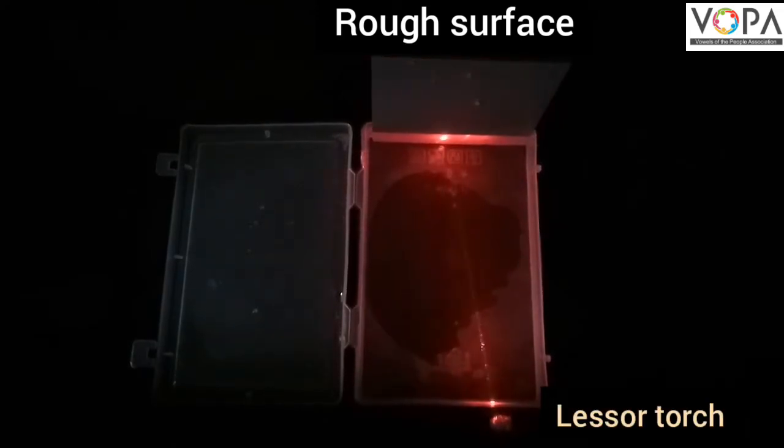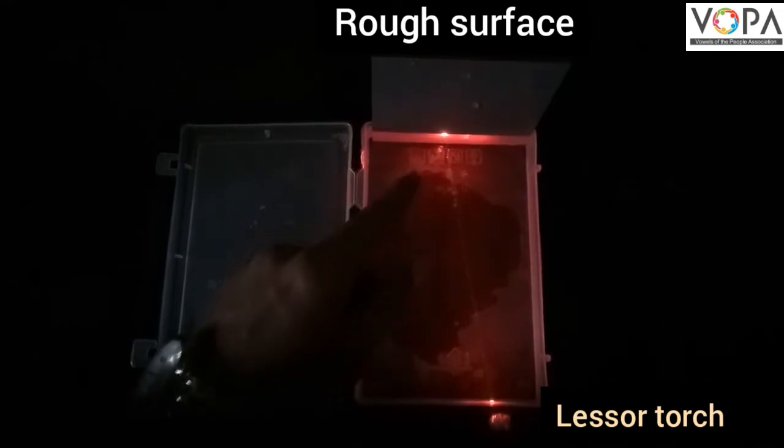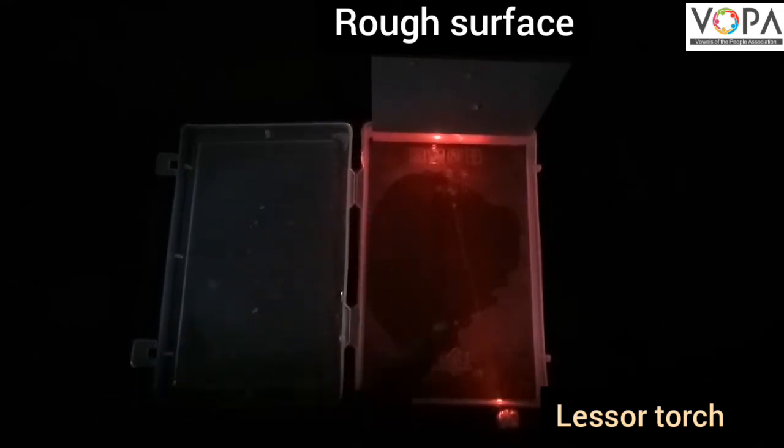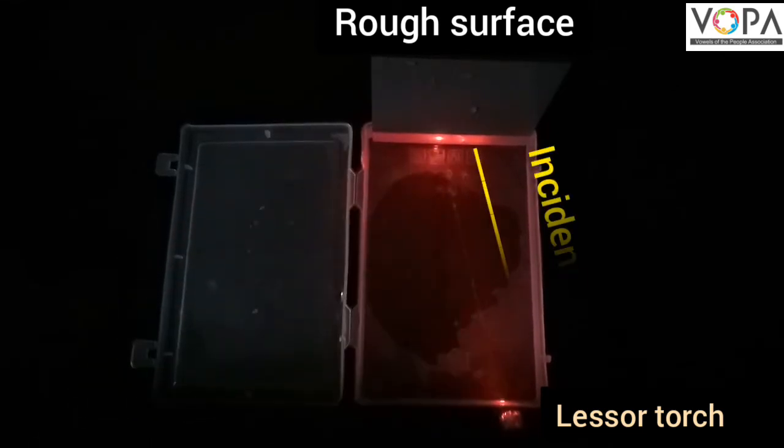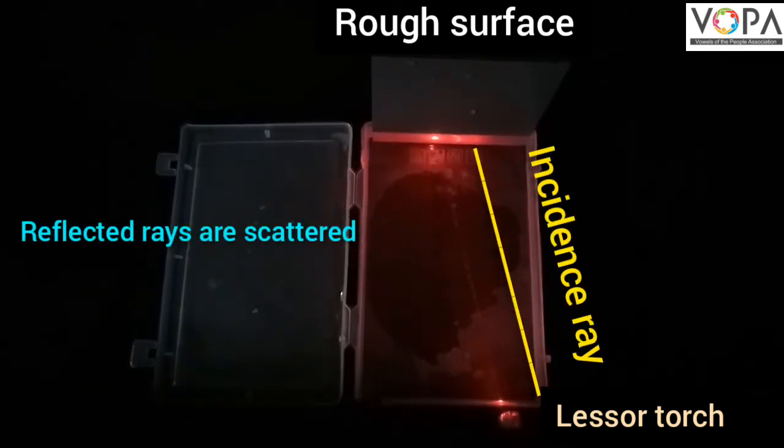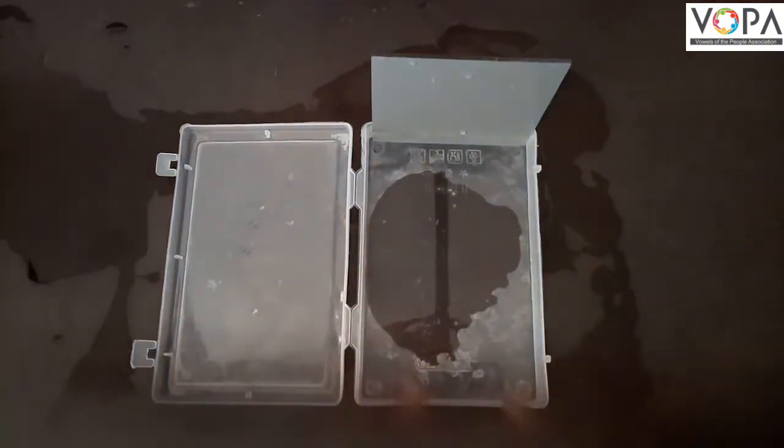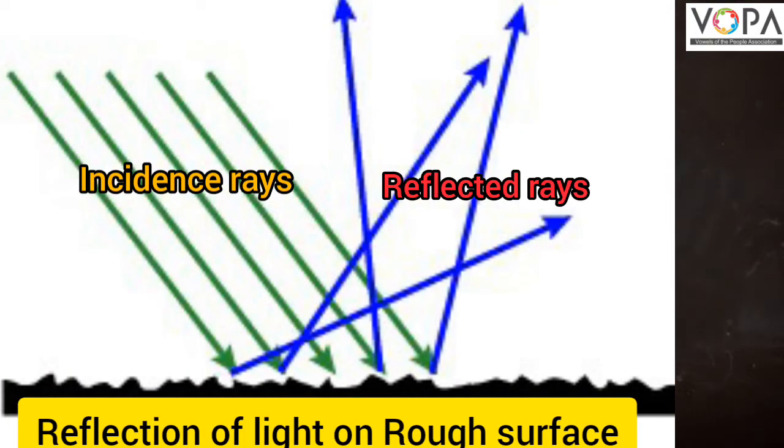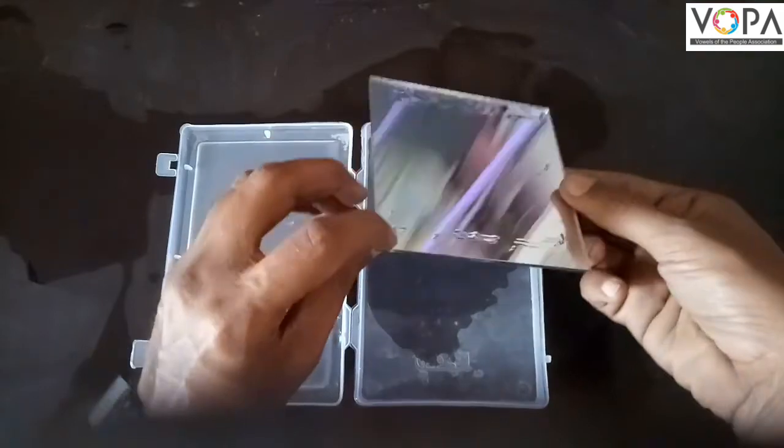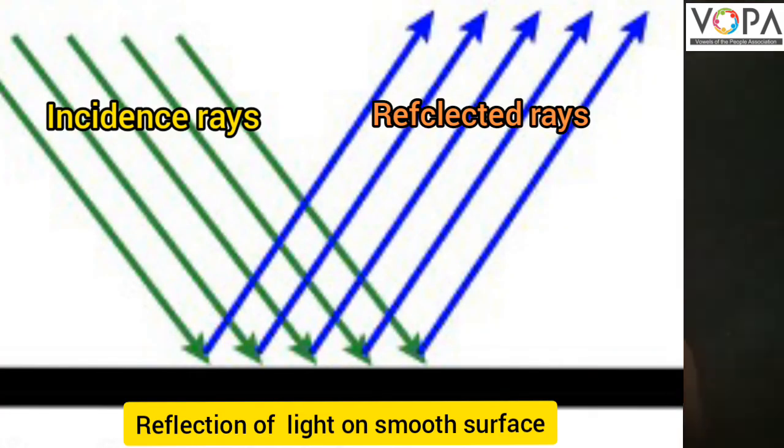So students you observe that laser light on the rough surface, this is an incident ray but the reflected rays does not form properly. When light rays fall on rough surface, the reflected rays are scattered and not parallel. But when light rays fall on smooth surface, the reflected rays are parallel and easy to observe.